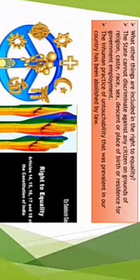There are also other things included in the right to equality. First, the state cannot discriminate against any of its citizens on the basis of their religion, caste, or place of birth or residence anywhere in India. Whether we belong to any caste or religion, or whether our place of living is in any part of India, we should get equal treatment from the government.